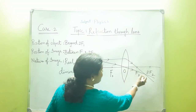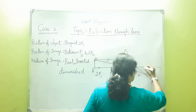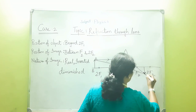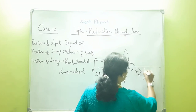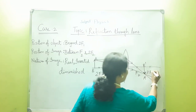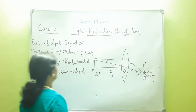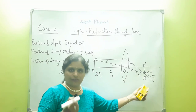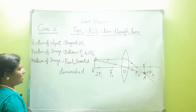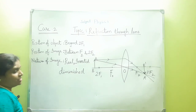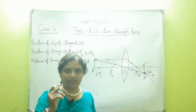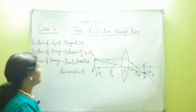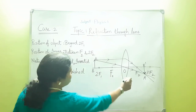Both refracted rays meet at a point — that is the image. A'B' is the image formed between F2 and 2F2. Since the rays actually meet after refraction, a real and inverted image is formed. In case 1 it was highly diminished, but here in case 2 it is a little bit small, so we call it a diminished image.